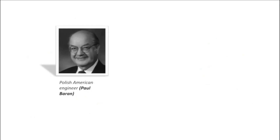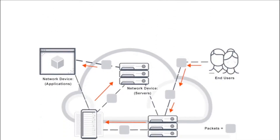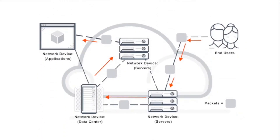In the early 1960s, Polish-American engineer Paul Baran proposed a distributed network based on data in the form of message blocks, and Welsh computer scientist Donald Davies constructed the principle of packet switching — grouping data into packets that are transmitted over a digital network in telecommunications.